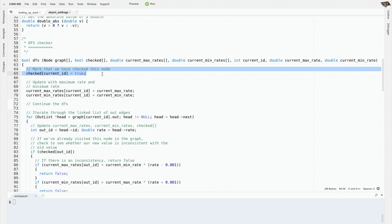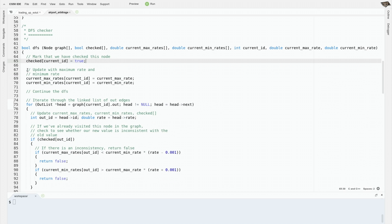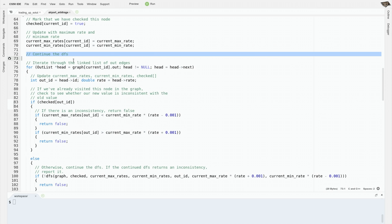First, we mark that we've already checked the node that we're currently at. We also mark the maximum and minimum amounts of money that we've decided that we can get at this node from whatever starting node we were called on. Then we iterate through all its neighbors by looking at all the out edges from this node.